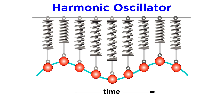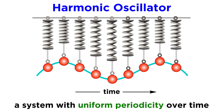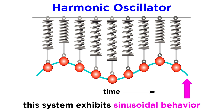First, we must understand that a harmonic oscillator model describes a system with uniform periodicity over time. This is usually referring to a simple sinusoidal wave, which indeed has a reliable periodicity, as opposed to systems that follow more complicated patterns over time, which generally would not be referred to as harmonic oscillators.